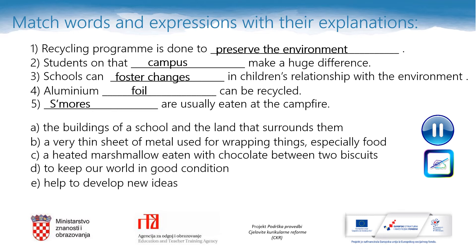The sentences are: Recycling program is done to preserve the environment. Students on that campus make a huge difference. Schools can foster changes in children's relationship with the environment. Aluminium foil can be recycled. S'mores are usually eaten at the campfire. The explanations are: the buildings of a school and the land that surrounds them; a very thin sheet of metal used for wrapping things, especially food; a heated marshmallow eaten with chocolate between two biscuits; to keep our world in good condition; help to develop new ideas.